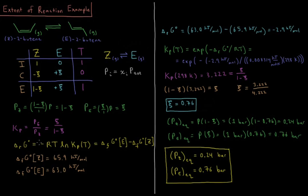The standard reaction Gibbs energy equals minus RT times the natural log of the equilibrium constant, which equals the standard Gibbs energy of formation of the product minus that of the reactant. We can look up both values: for the Z isomer, ΔfG° is 65.9 kJ/mol; for the E isomer, it's 63.0 kJ/mol. So the standard Gibbs energy of reaction is 63.0 minus 65.9, giving negative 2.9 kJ/mol.